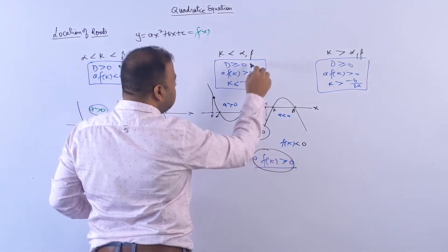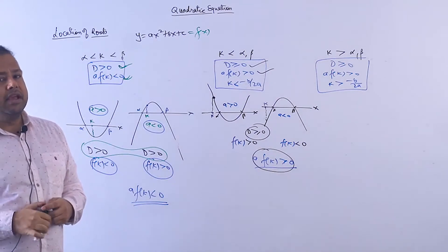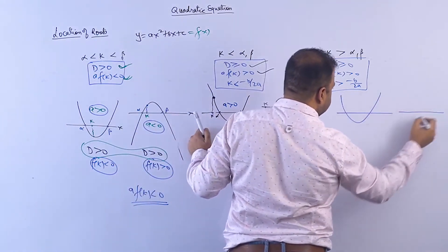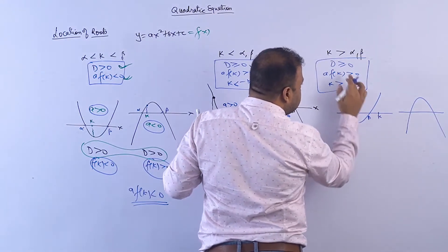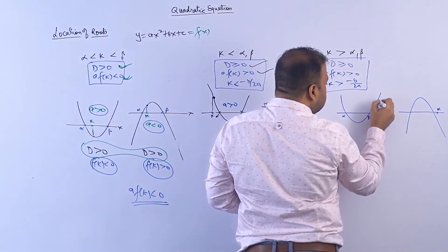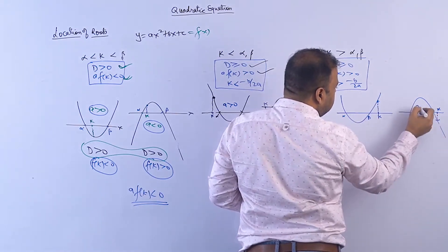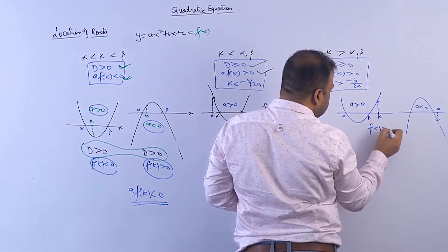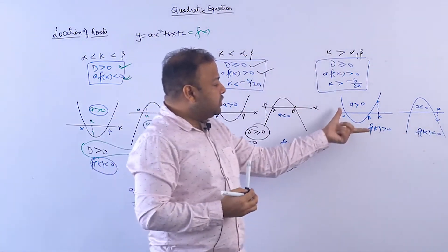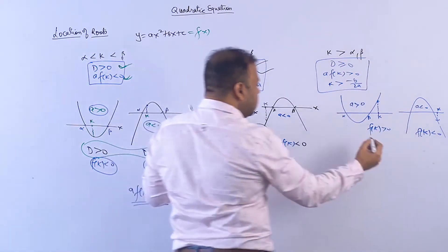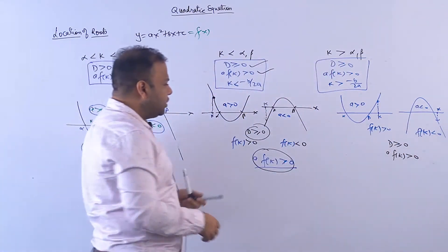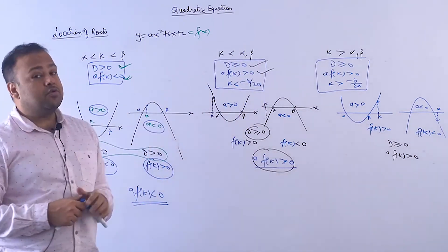But there is a problem: when k is greater than both roots, the same condition a·f(k) > 0 also applies! So these two conditions — D ≥ 0 and a·f(k) > 0 — are the same for both 'k less than both roots' and 'k greater than both roots'. We need a third condition to differentiate.